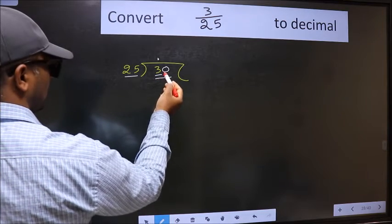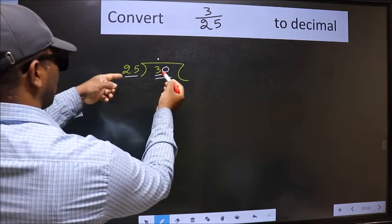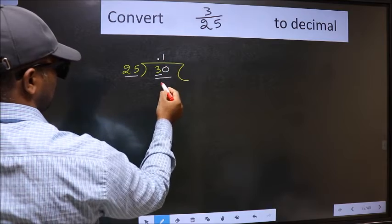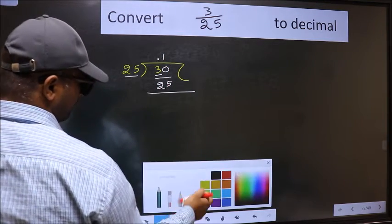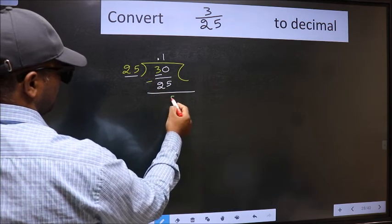So, 30. A number close to 30 in 25 table is 25 once 25. Now, we should subtract. We get 5.